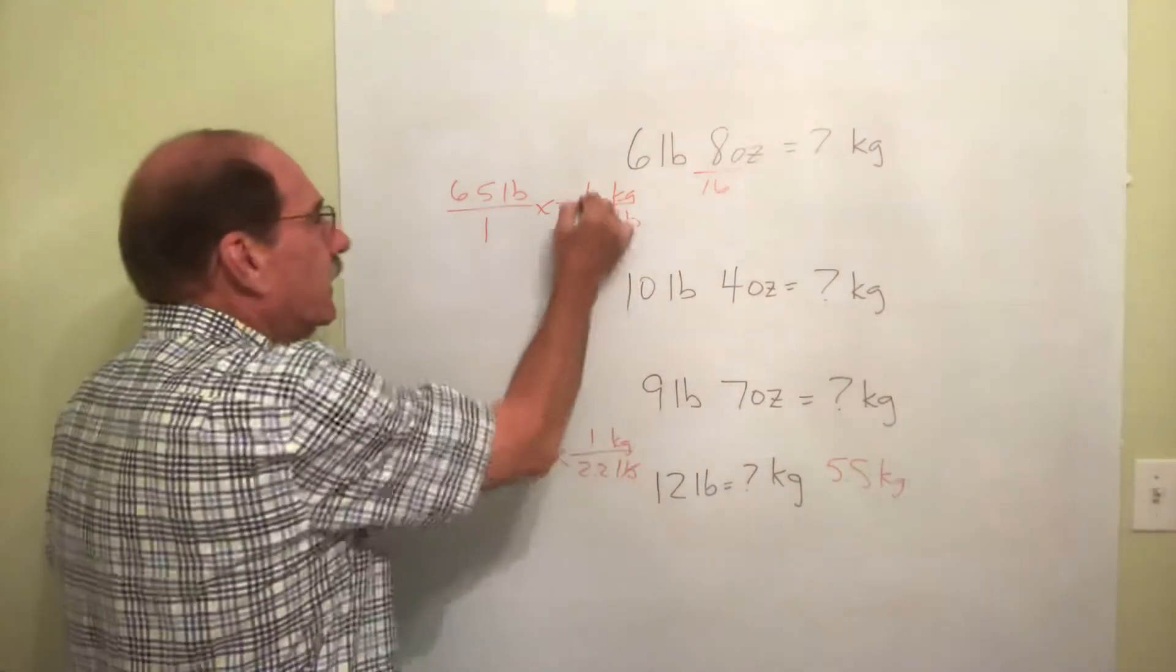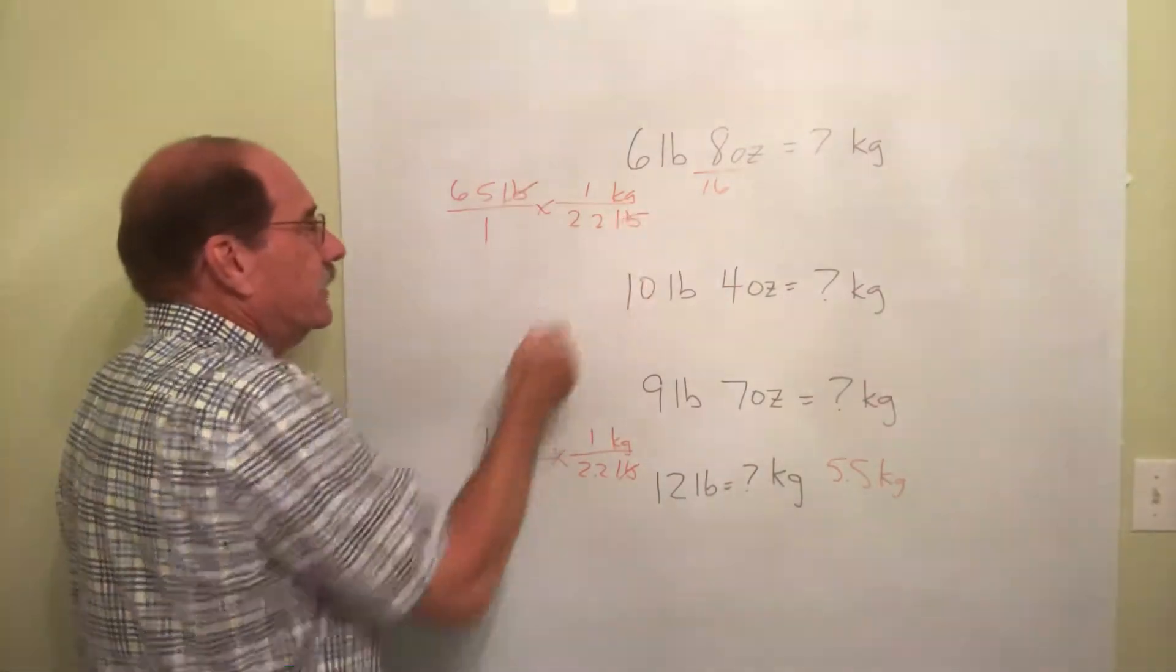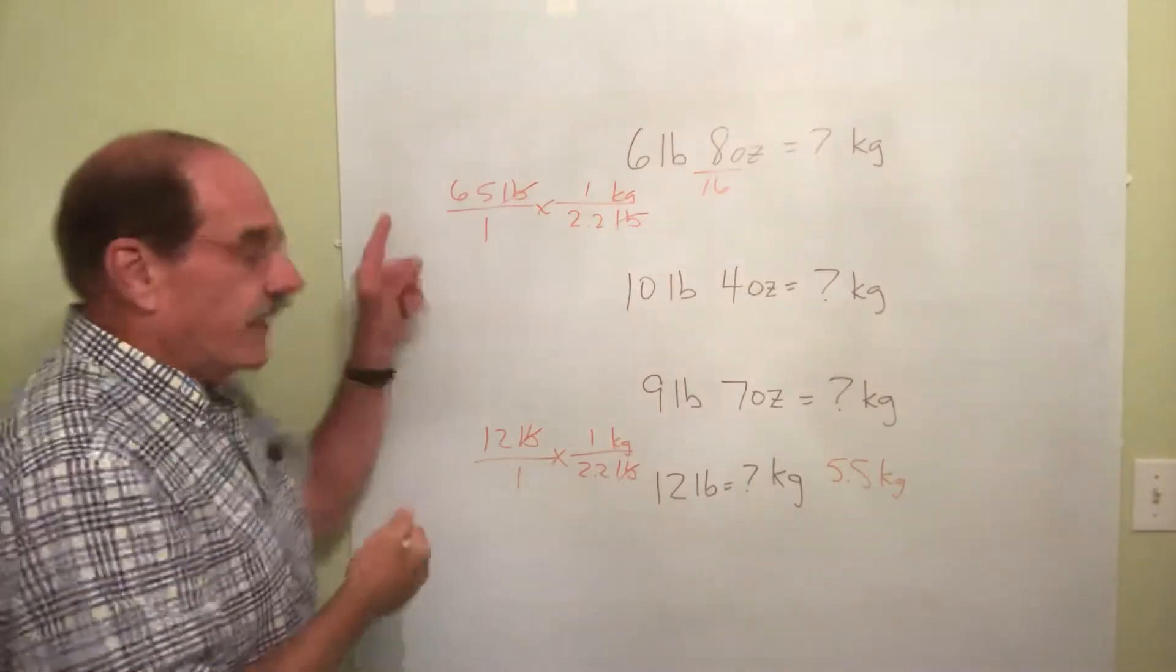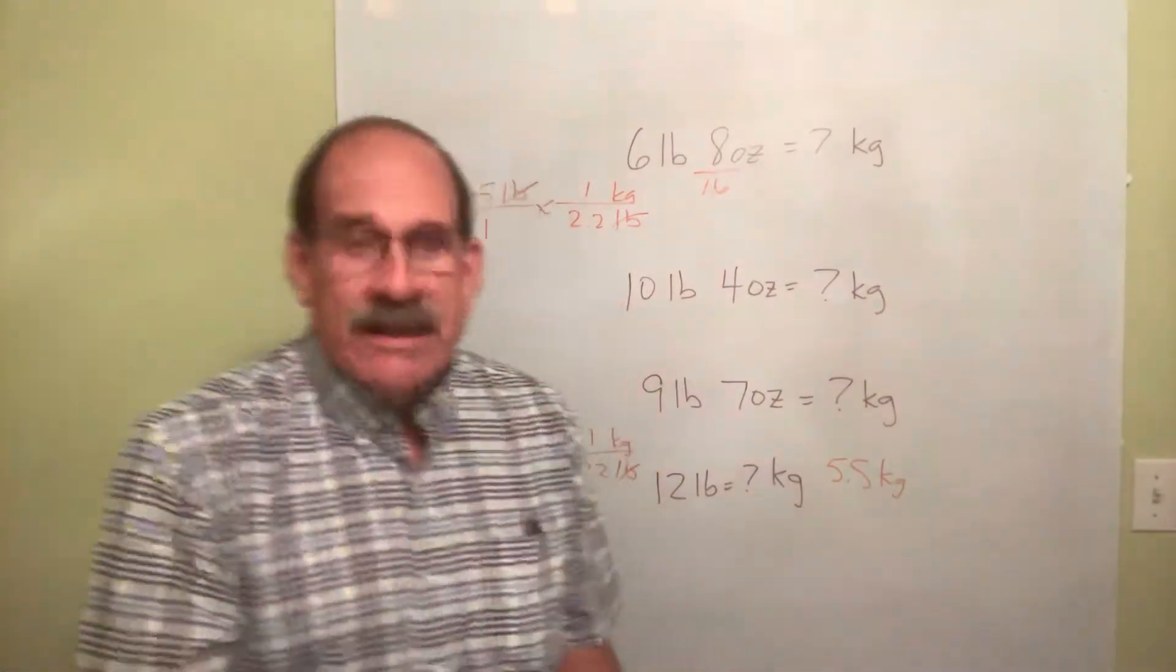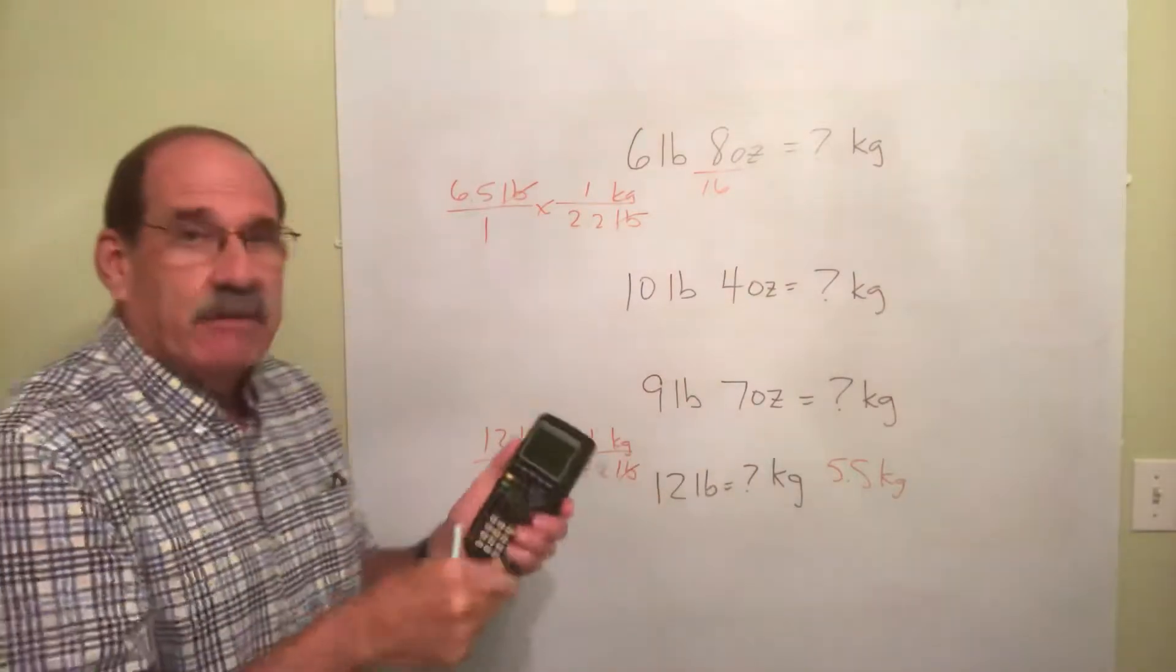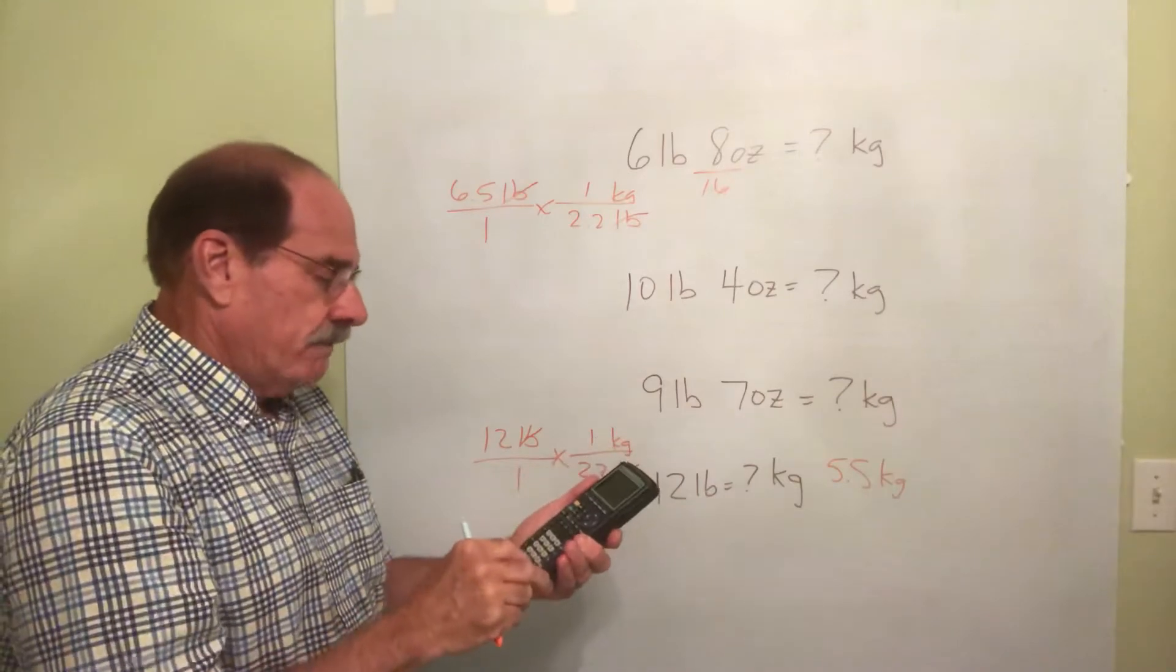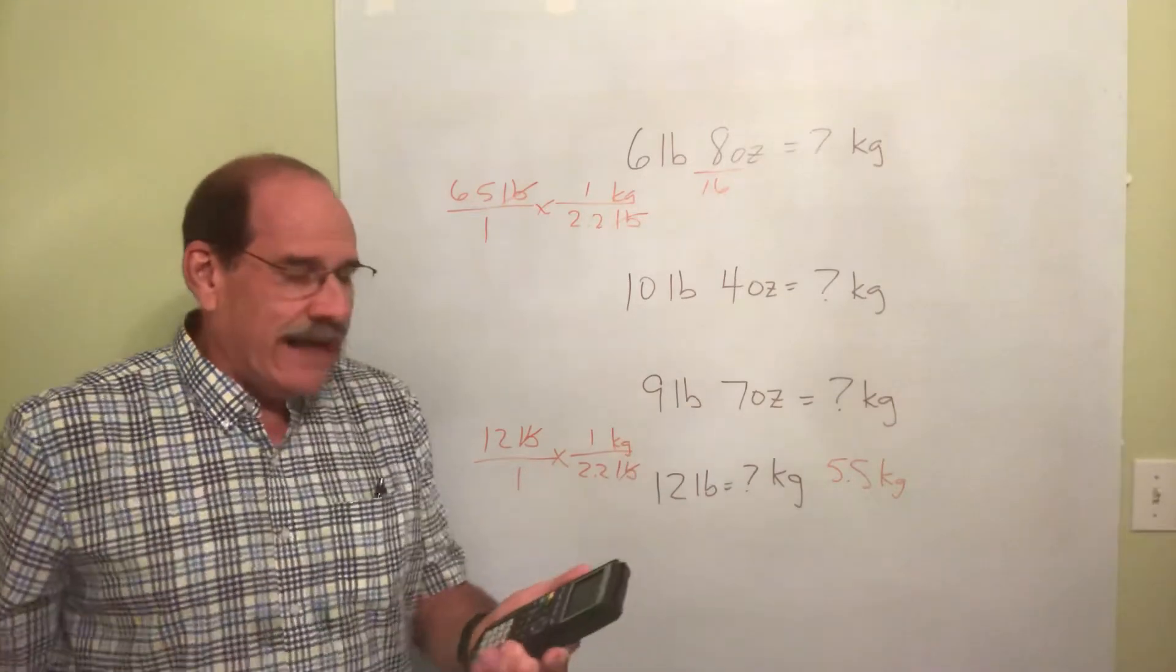Again, 1 kilogram is 2.2 pounds. Scratch this out, scratch this out. So we take the 6.5. And by the way, it's already in the calculator. Just leave it there. Then just take that 6.5 number that still should be in your calculator and say divided by 2.2. And the answer is 2.95.